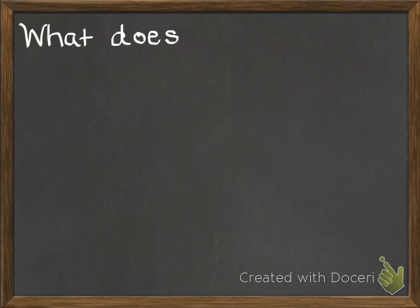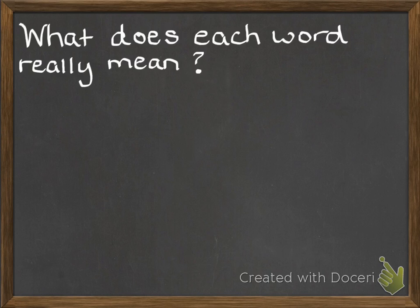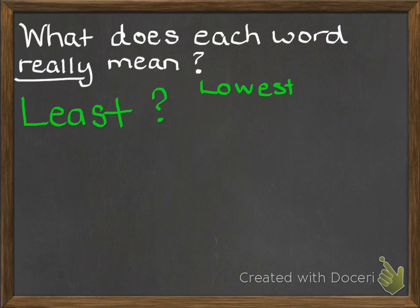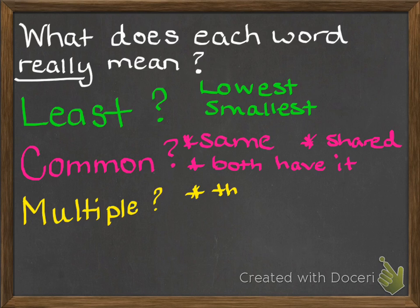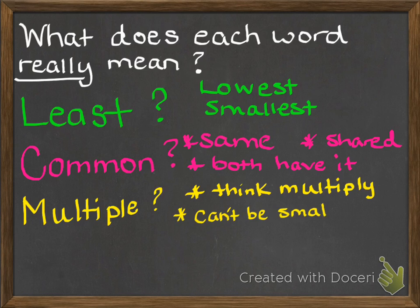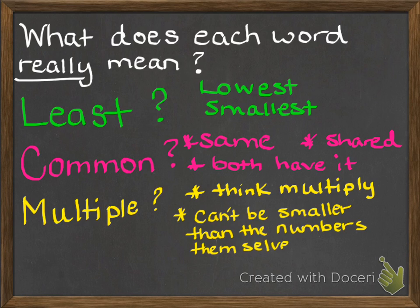So what does each word really mean in 'least common multiple'? Just like we did for greatest common factor, let's look at each word. 'Least' means the lowest, the smallest, or it has the least value. 'Common,' just like it did with greatest common factor, means the same, shared, or both have it. 'Multiple' is where it gets tricky, because a lot of people can do LCM or GCF but then have problems differentiating in the actual problems. A multiple means you're going to think multiply, and the main point is it can't be smaller than the numbers themselves.